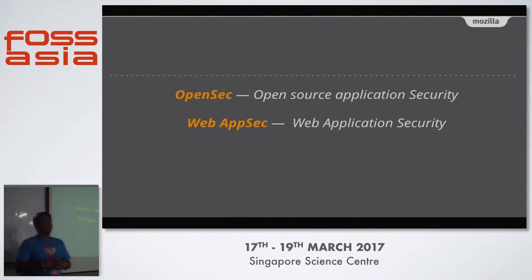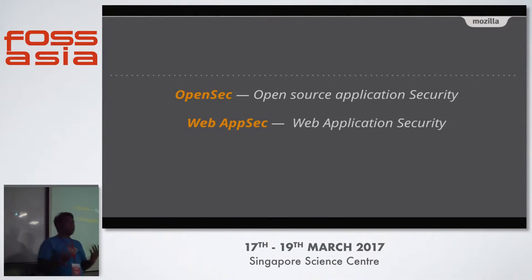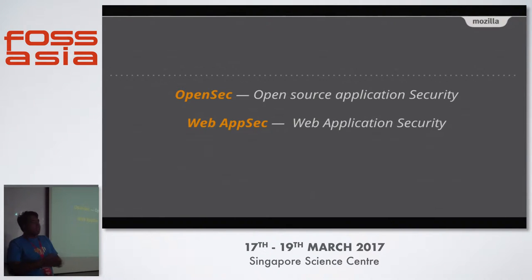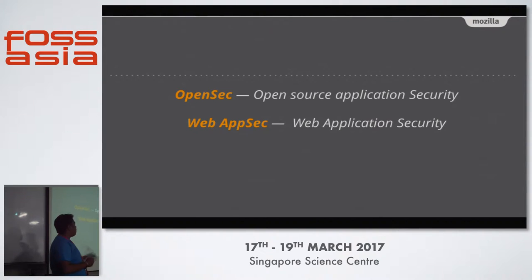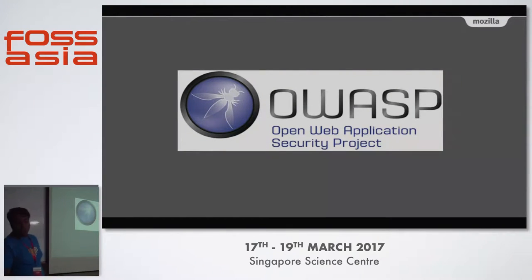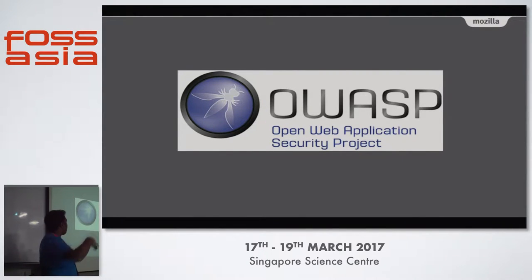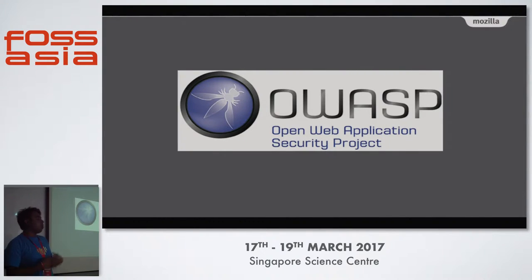Most of us code and publish open source on GitHub — we create software, tools, and projects — but not all of us care about security. Our data might be stolen and we don't think about it. Web application security is a very well-known topic. How many of you know about OWASP? It's called the Open Web Application Security Project — it's a very well-known resource.